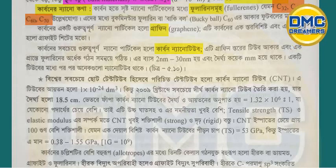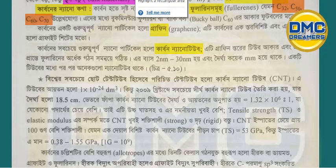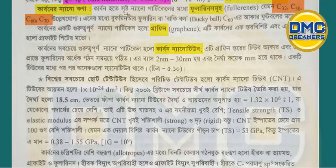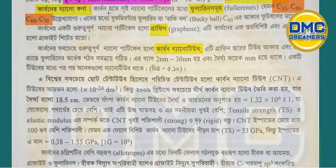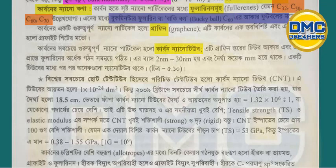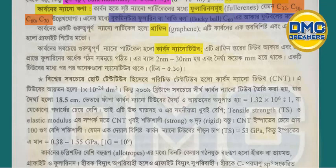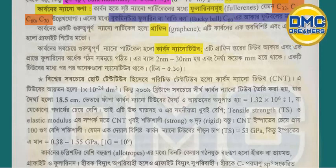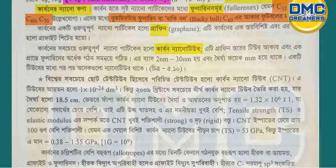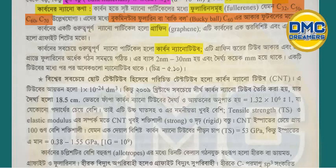The fullerene is a well-known carbon structure. C-60 is a key fullerene, also referred to as Buckminsterfullerene, formed from C-60 carbon atoms arranged in a spherical shape.